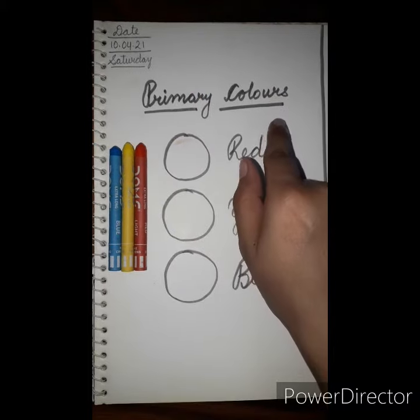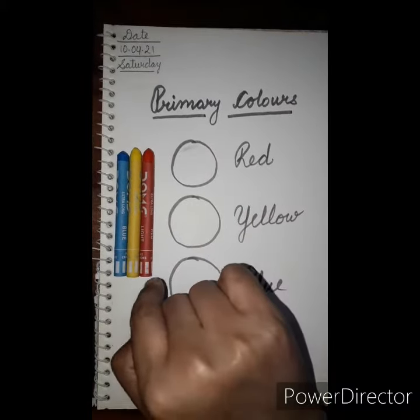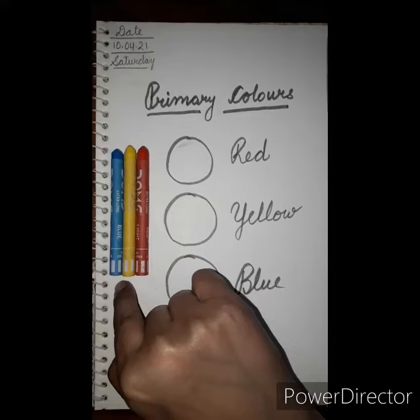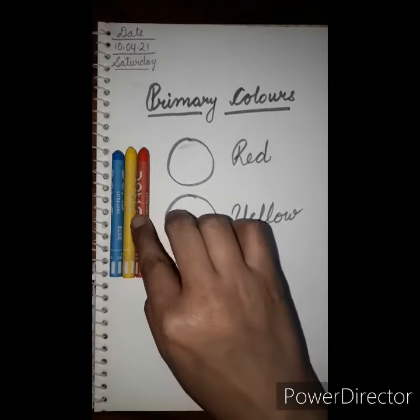Okay children, primary colors — what are primary colors? Red, yellow and blue are your primary colors.